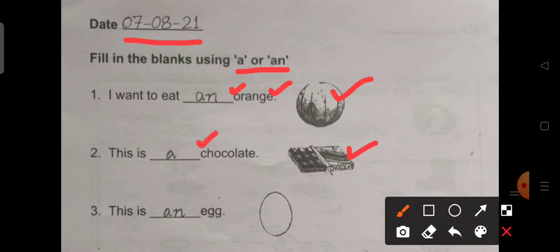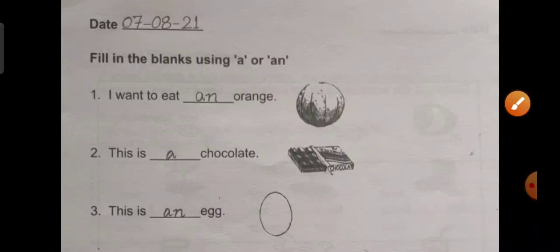Number 3. This is dash egg. This is an egg. The word egg begins with a vowel sound.